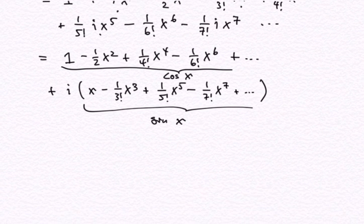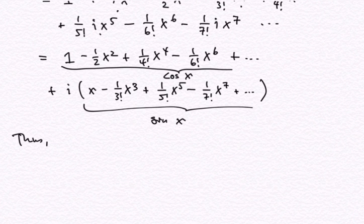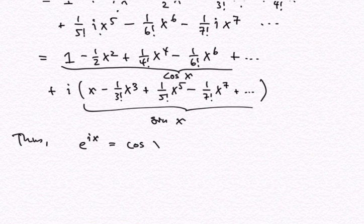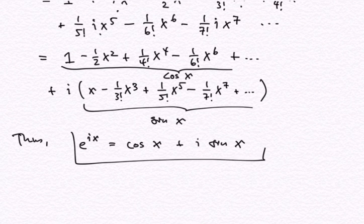And so we get one of the central relations between the exponential function and the trigonometric functions when we allow for complex arguments: e to the ix equals the cosine of x plus i times the sine of x. This is Euler's formula.